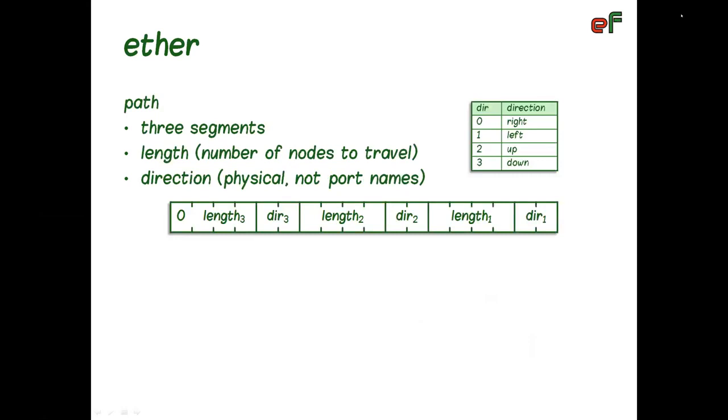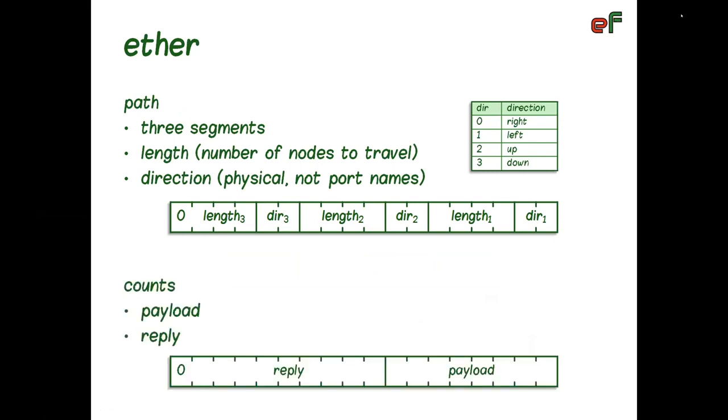Ether path may have up to three segments, and each segment is described by its length and direction, where directions are physical directions, not port names. Counts are eight bits for payload and nine bits for reply, so that defines maximum payload and reply length in one message.